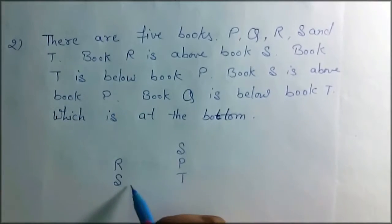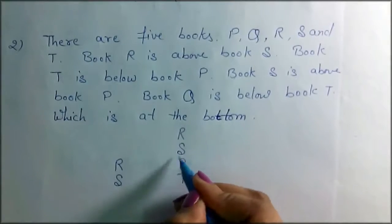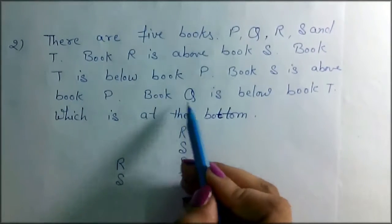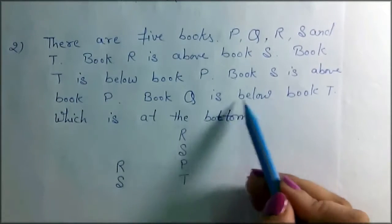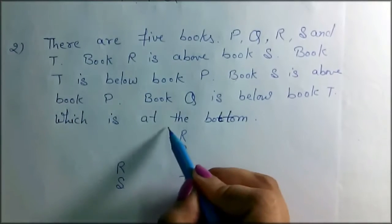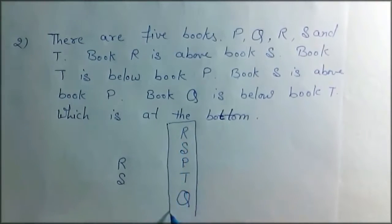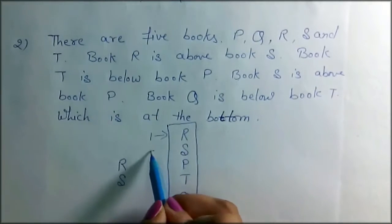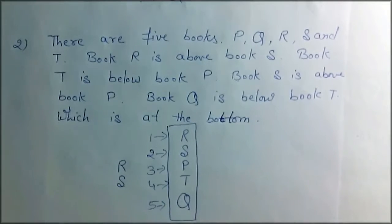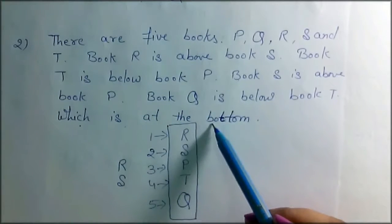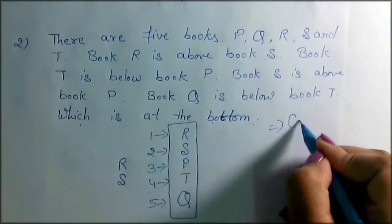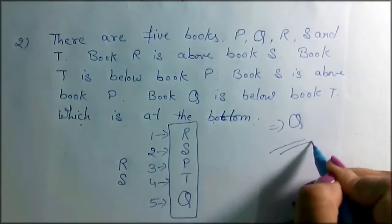Book S is above book P. When we get this connection, R is already above. Book Q is below book T. So now we have our diagram: first position is R, second is S, third is P, fourth is T, fifth is Q. We are asked which book is at the bottom — which book is lowest? Our answer is Q.